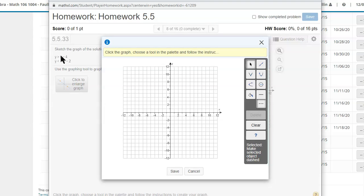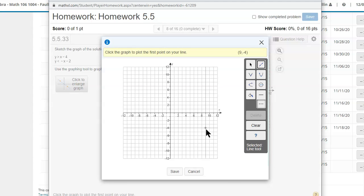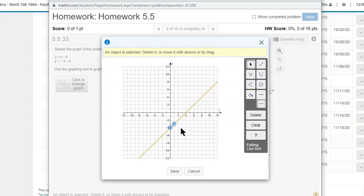These will graph as lines. They're linear equations, so I'll pick the line tool. The y-intercept is negative 4, so I'll start at negative 4. The slope is 1, so I'll go up 1 to the right 1, and that gives me my first line.